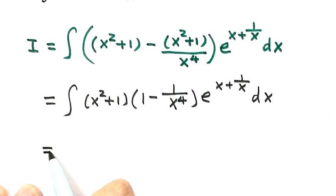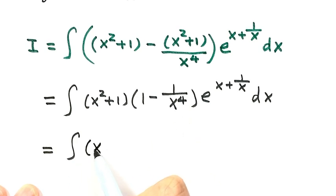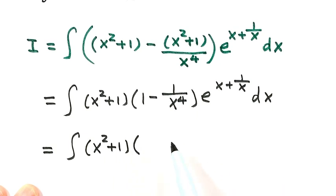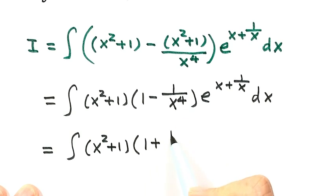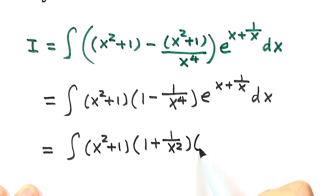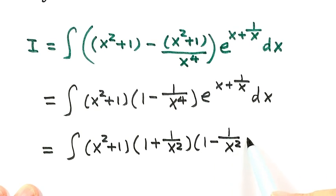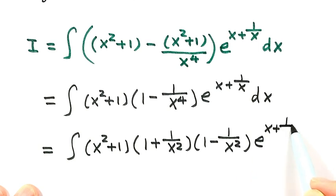Next, factor this part. Here: x squared plus 1. This expression is 1 over x squared, squared. So here just 1 plus 1 over x squared, times 1 minus 1 over x squared. Then e to the power — this part — then dx.